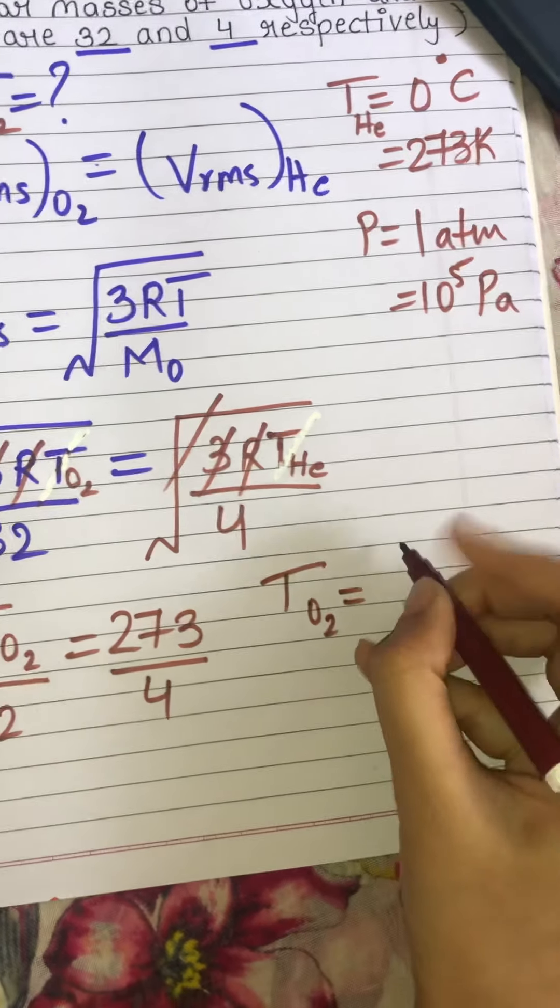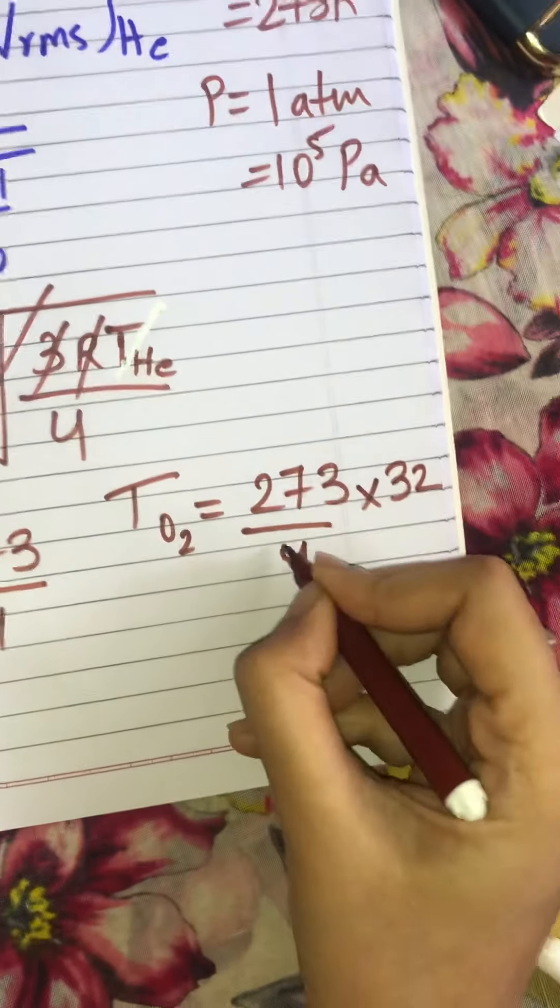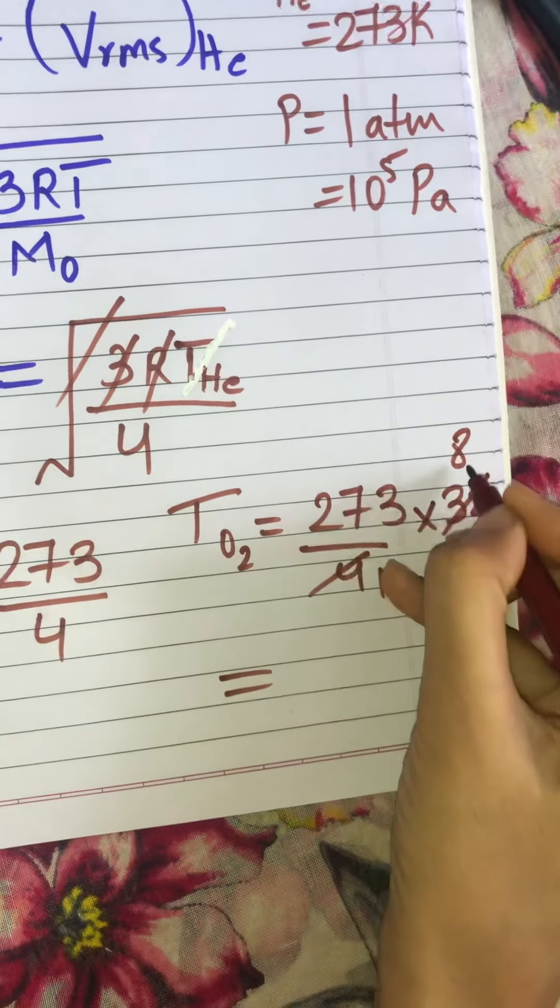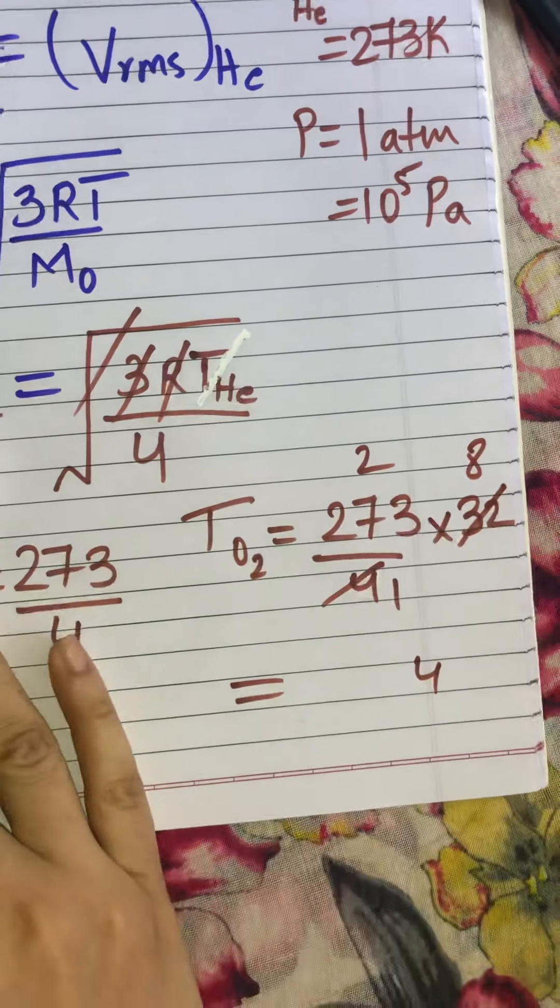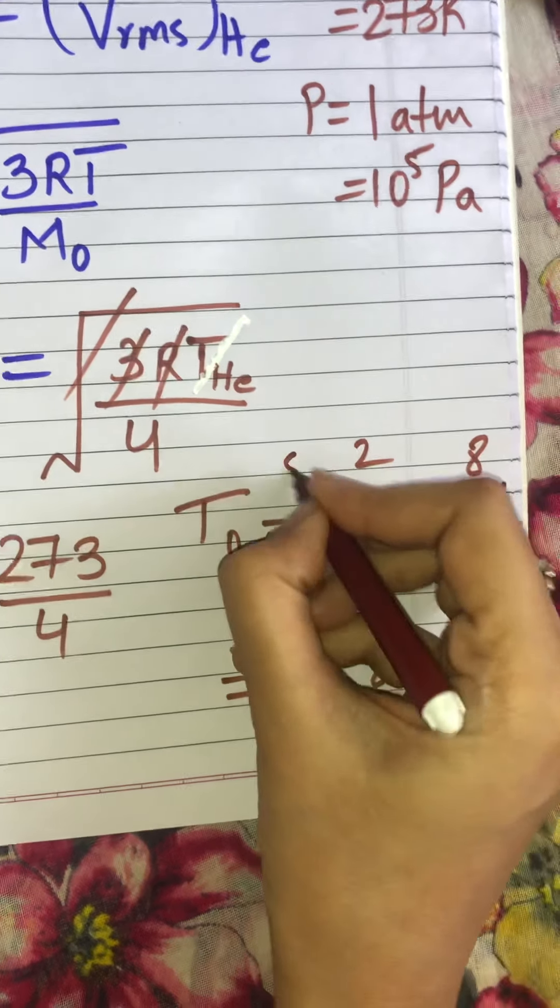Temperature for oxygen equals 273 upon 4 into 32. Four ones are four, four eights are 32. Now, three eights are 24, two sevens and eight are 56, 57, 58, and here we have 5.